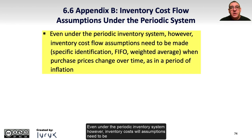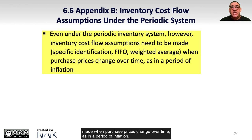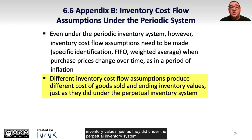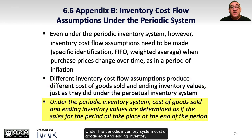Even under the periodic inventory system, inventory cost flow assumptions need to be made when purchase prices change over time, as in a period of inflation. Different inventory cost flow assumptions produce different cost of goods sold and ending inventory values, just as they did under the perpetual inventory system. Under the periodic inventory system, cost of goods sold and ending inventory are determined as if the sales for the period all took place at the end of the period.